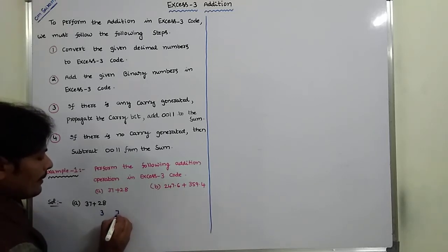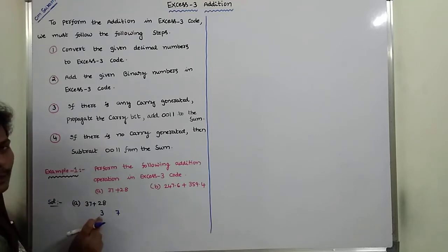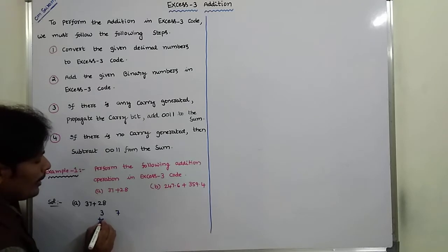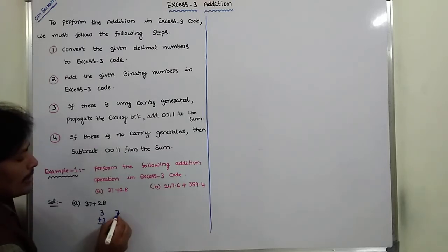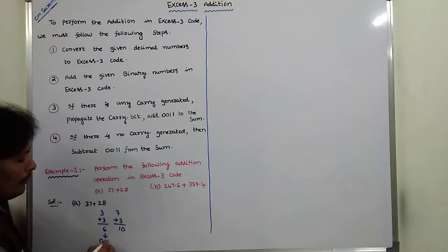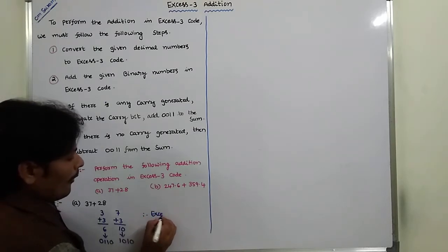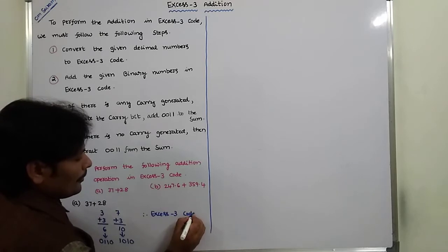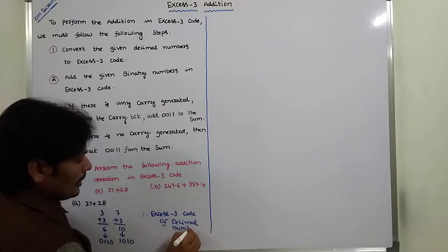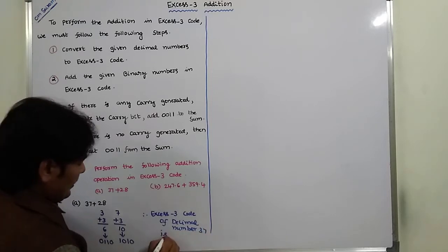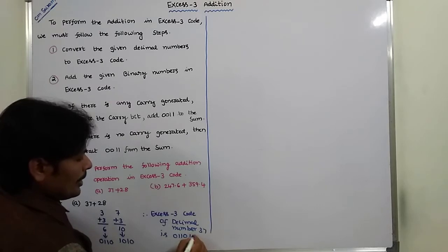For decimal 37: digit 3 plus 3 equals 6, whose binary equivalent is 0110. Digit 7 plus 3 equals 10, whose binary equivalent is 1010. Therefore, XS3 code of decimal number 37 is 0110 1010.